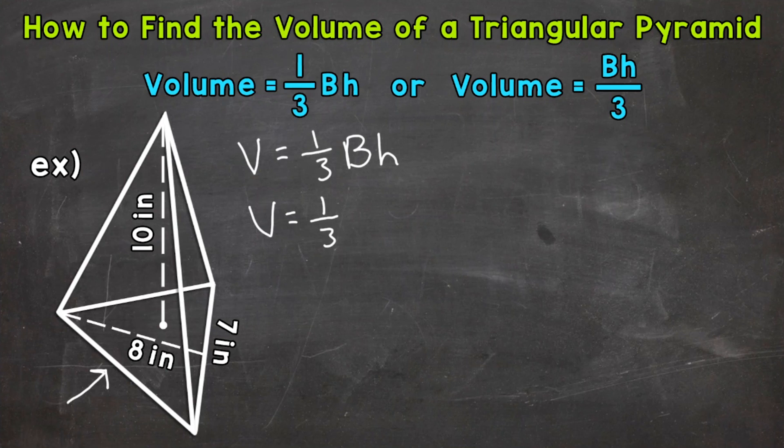So we can use the formula area equals 1 half times the base times the height. Or you can do base times height divided by 2. Multiplying by a half or dividing by 2, they will get you the same answer.